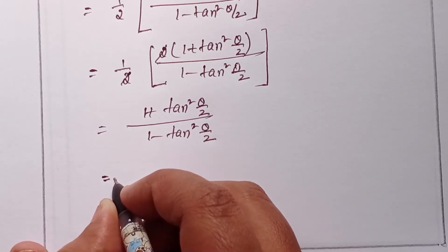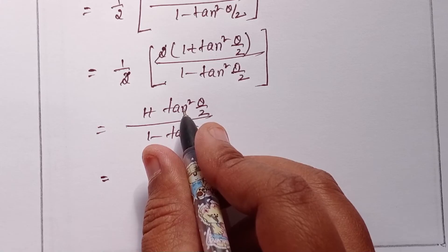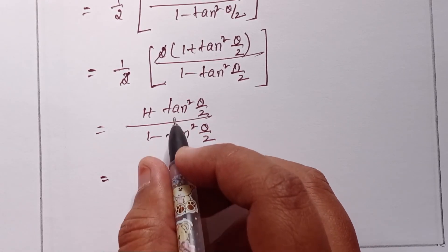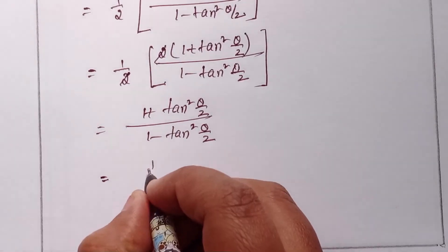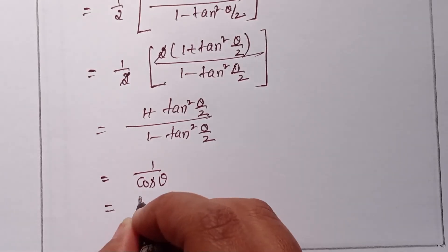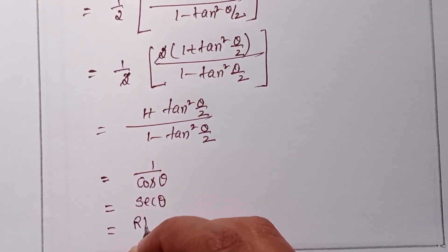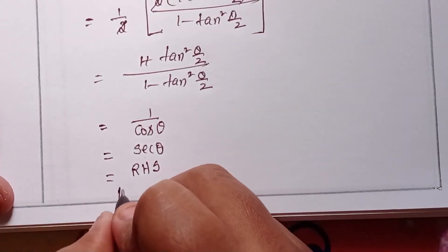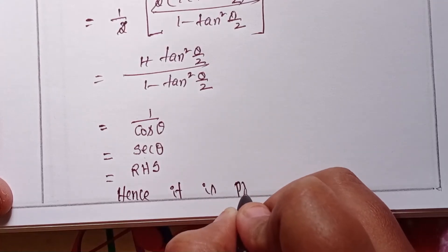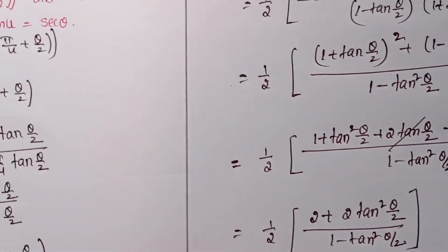This expression (1 + tan²(θ/2)) / (1 − tan²(θ/2)) equals cos θ. But here the form is inverted, so we take the reciprocal. 1 divided by cos θ equals sec θ. This is the RHS. Hence it is proved. This completes the solution to question number 8.